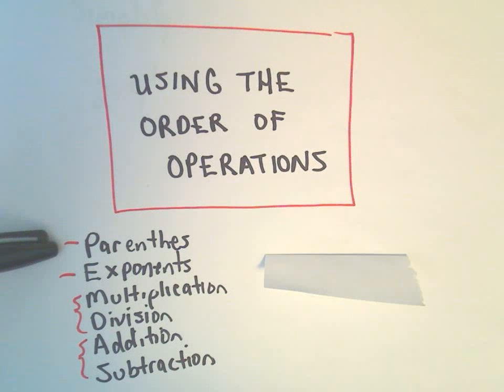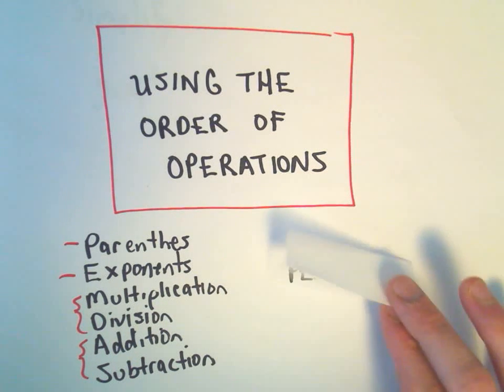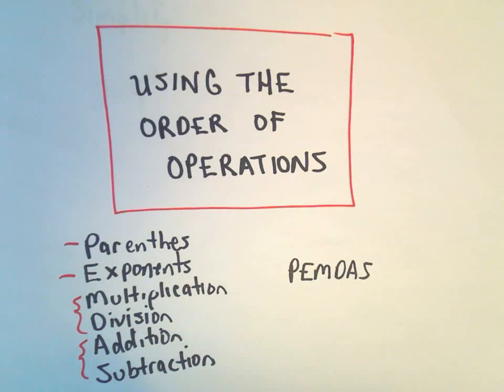So what it says is we first do anything in parentheses or brackets. Next, we evaluate any exponents. Next comes multiplication and division, and those have equal priority. Kind of do things left to right. And then comes addition and subtraction. Again, you can kind of do things left to right. Addition and subtraction is a little less picky though. You have to be careful with the multiplication and division as you'll see.